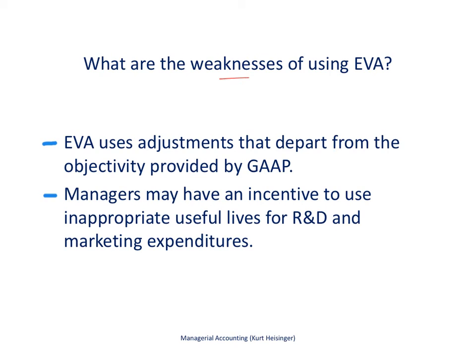What are the weaknesses of using Economic Value Added? First, EVA uses adjustments that depart from GAAP. By doing that, we are no longer being objective, and some would argue that's a poor direction because we can start to manipulate the numbers. Second, managers may have an incentive to use inappropriate useful lives for R&D and marketing expenditures — for example, pushing amortization from five years out to ten years, which would make the manager look better. The numbers can be manipulated once we start departing from GAAP, so we have to be careful to use this measure to benefit the company and not to manipulate results.